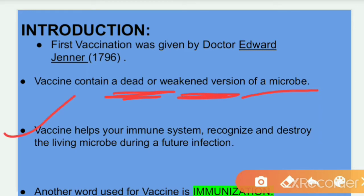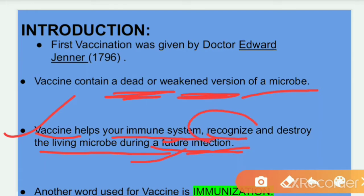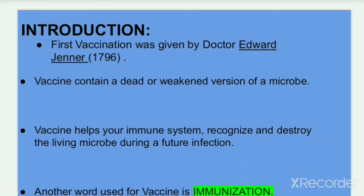Vaccine helps your immune system recognize and destroy the living microbe during a future infection. When a microbe is introduced via a vaccine, the immune system learns to recognize it, so that if a live infection occurs later, the immune system will be able to recognize and destroy it.